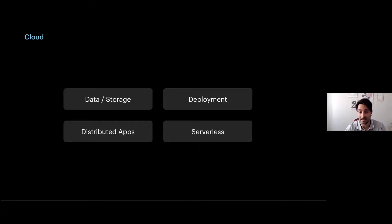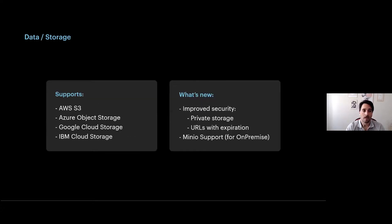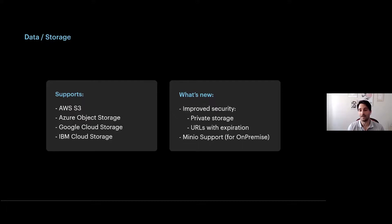Regarding cloud, we worked on several lines: storage and data, distributed apps, deployment, and serverless. In terms of storage, GeneXus 16 already supports file storage, block storage, and audio/video storage on Azure, Google, or IBM. What we added was support for private objects served with URLs that have an expiration time. We also added MinIO support, which is a platform similar to Amazon S3 that allows us to use the same cloud tools on-premises.